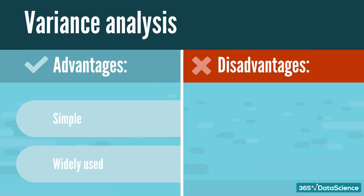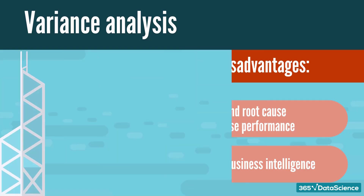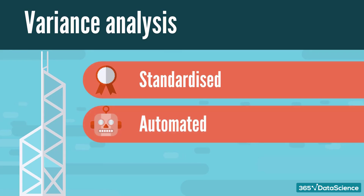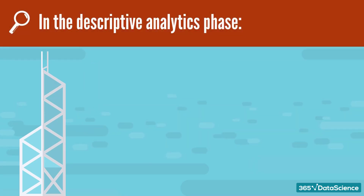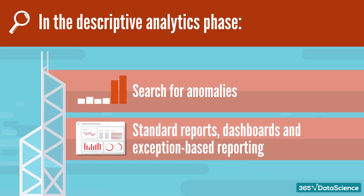Some of the disadvantages are that variance analysis does not touch the root cause — it often falls short of explaining the reason for adverse performance. Also, the information used can be incomplete. Understanding variances cannot be done by looking at numbers alone; you need good business knowledge and business intelligence. Modern organizations seek to standardize and automate the production of variance analysis according to common processes, information standards, and systems. During this phase, companies look at the underlying data and try to find anomalies. Companies introduce standard reports and dashboards, often incorporating exception-based reporting.